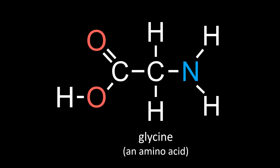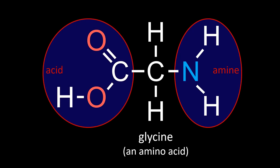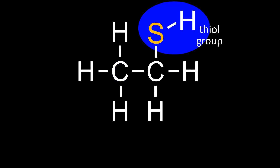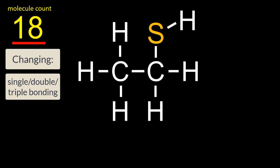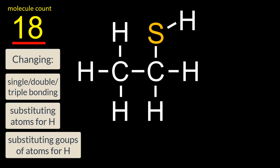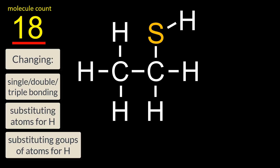I hope you can see from this structure where the term amino acid derives. All amino acids have this basic structure, only differing by what groups of atoms are displacing one of the hydrogens, designated with the letter R. And thiols play a large part in protein folding when they are present in peptide chains. So we've made 18 different organic compounds at this point just by changing the amount of bonds between the carbons or by substituting other atoms or groups of atoms for hydrogen — and this is just the tip of the iceberg for only two carbons.